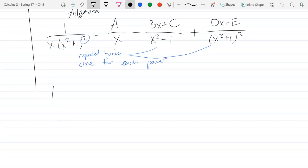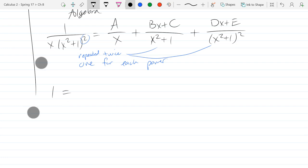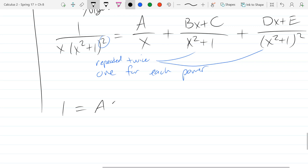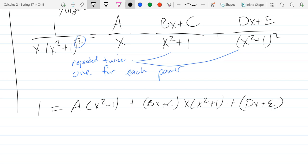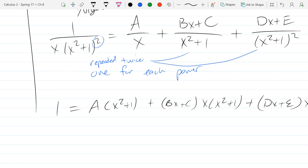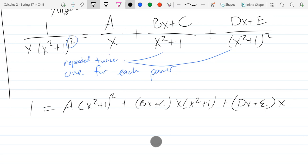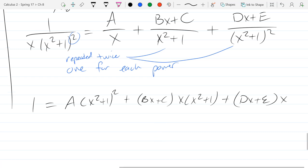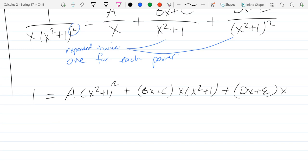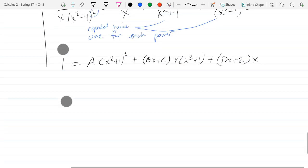Multiply by the denominator. There's only one good x value here, which is 0, because that will make two of the three terms disappear. So we're going to take advantage of that.